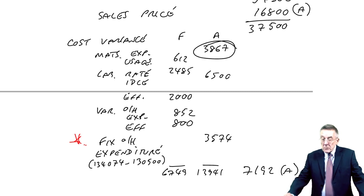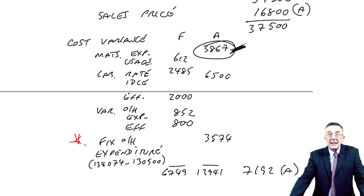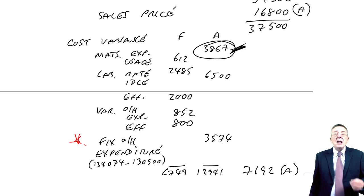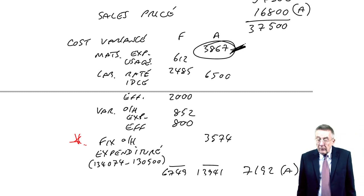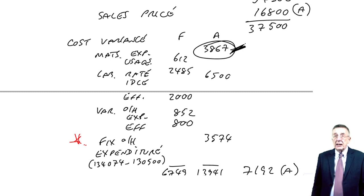So what I'm going to do, I could pick any of them, but if we look at that materials expenditure variance, it was adverse 3867. And remember, that's simply related to one thing. It's nothing to do with how much material we used. It was simply checking, did we pay, whatever it was, 450 a kilo or not? We obviously paid more than 450 a kilo. And whatever manager's responsible for that, we'd be asking him to give us a report, why did we pay more than 450 a kilo?